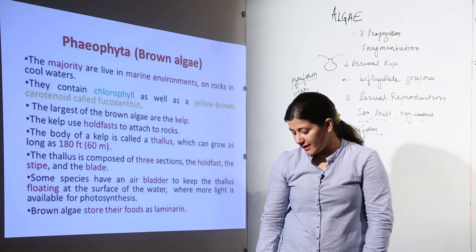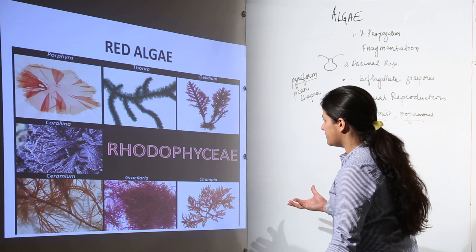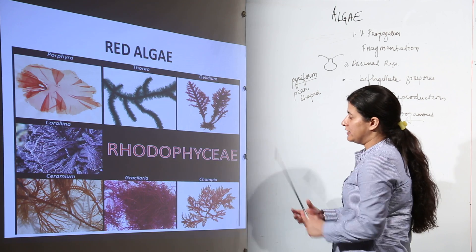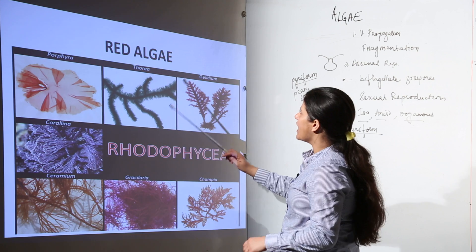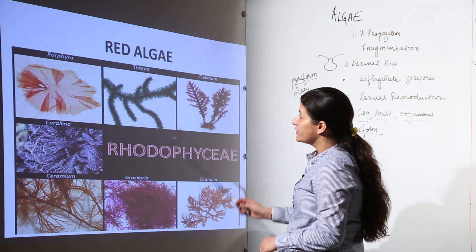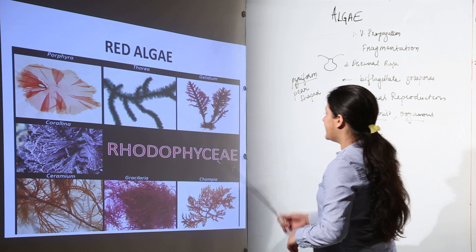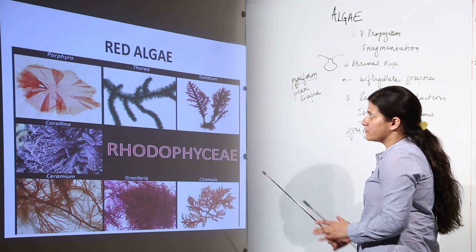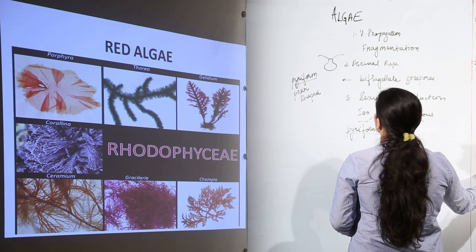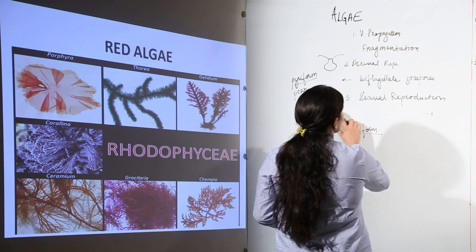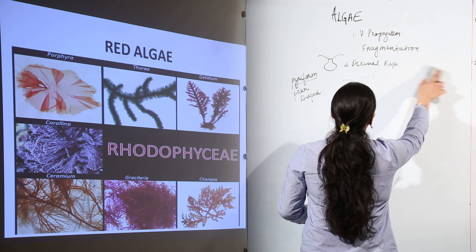In the case of red algae, the term is Rhodophyceae. Examples include Porphyra, Thoria, Gelidium, Coralina, Ceramium, Gracilaria, and Campia. One important name to remember is Batrachospermum, which is a freshwater red algae.